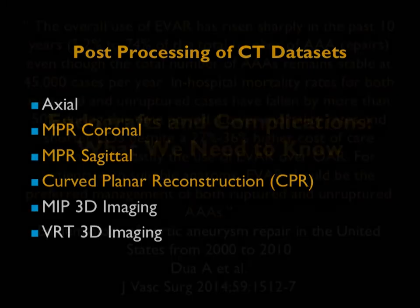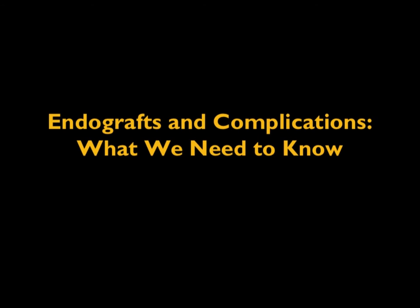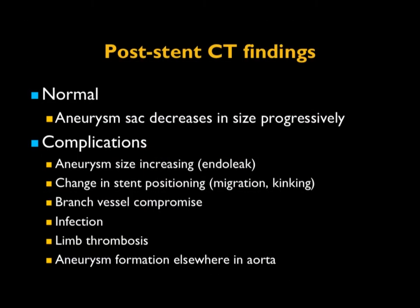What do we need to know about endoleaks? Post-stent CT findings: if the aneurysm decreases in size progressively, that's a success. But complications include the aneurysm increasing in size, endoleaks, stent migration, kinking, branch vessel compromise — particularly true in the renal arteries — infection, limb thrombosis, and aneurysm formation elsewhere. Here's a good example: baseline 6 centimeters, follow-up a year later now 4.8 centimeters — excellent result, though there is a small endoleak present.